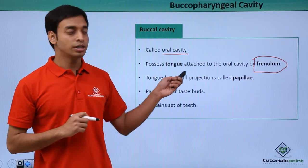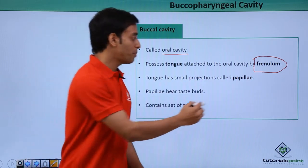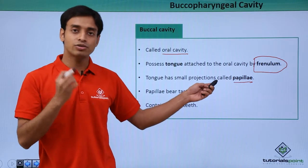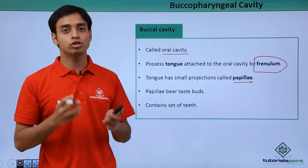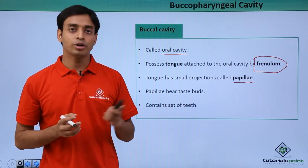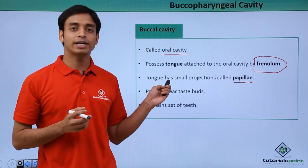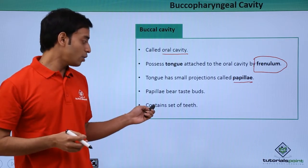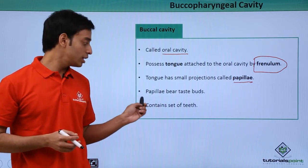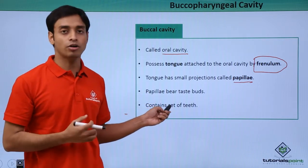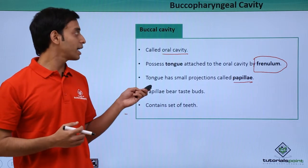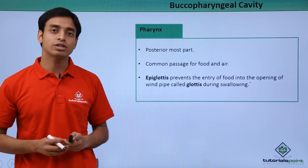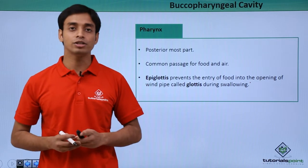The frenulum connects the tongue with the floor of the buccal cavity. The tongue has very small minute projections known as papillae, which are also known as taste buds — because of these we can taste different types of food materials. The buccal cavity also has a set of teeth.